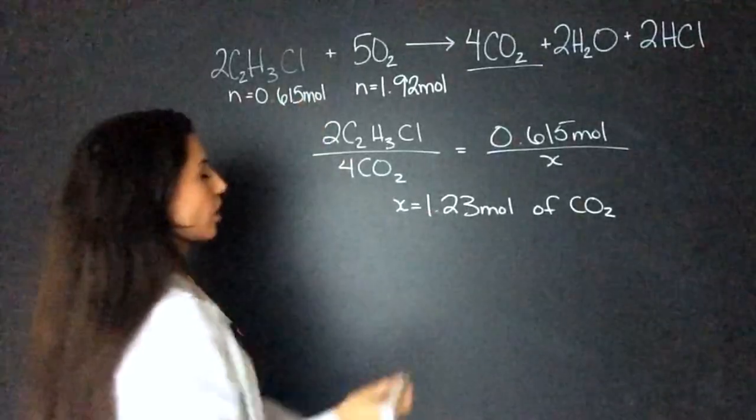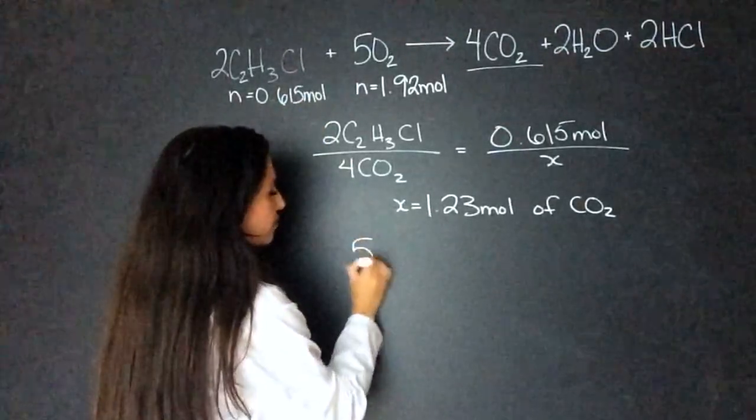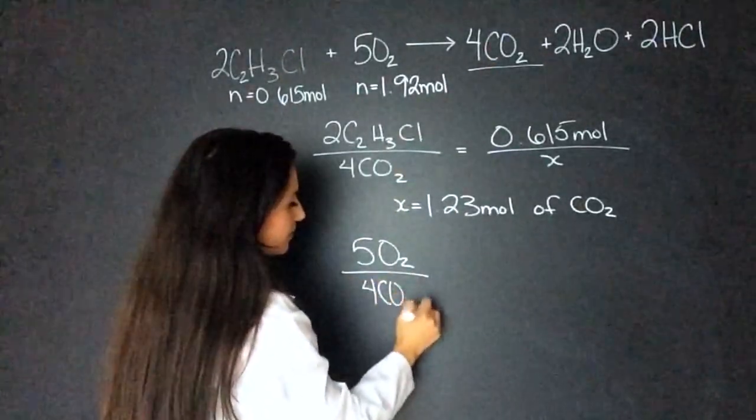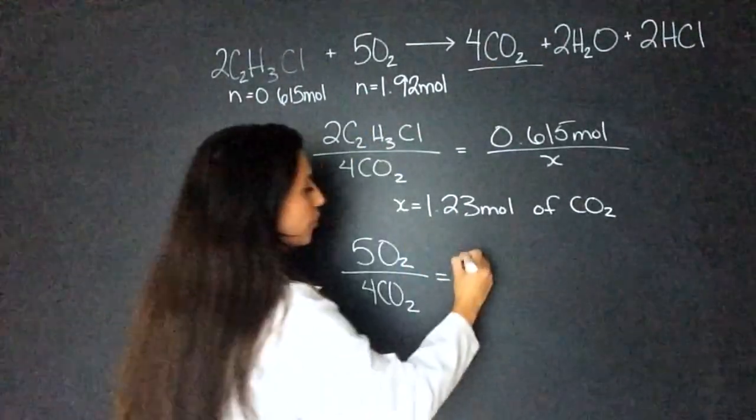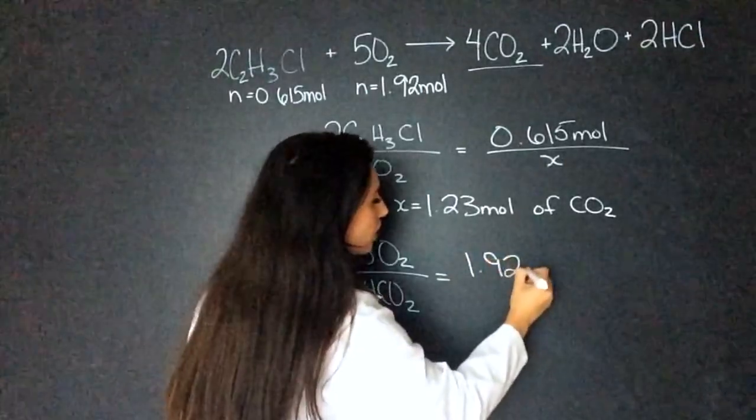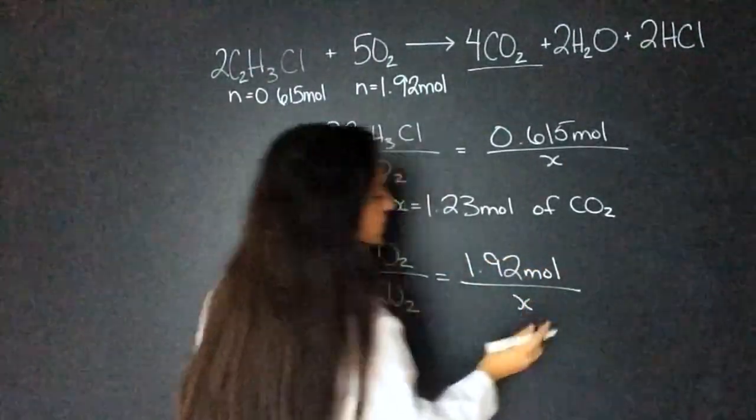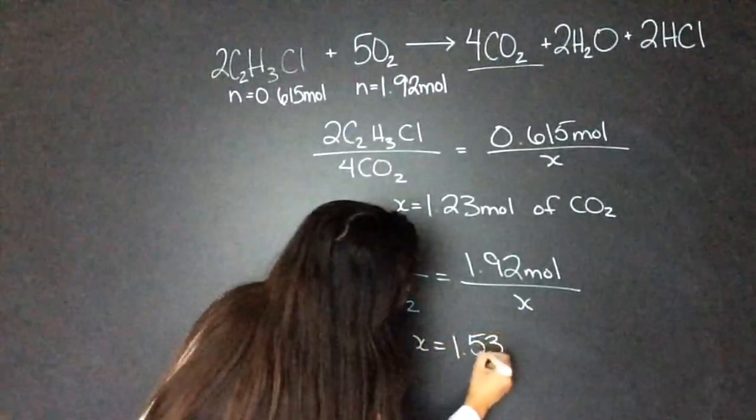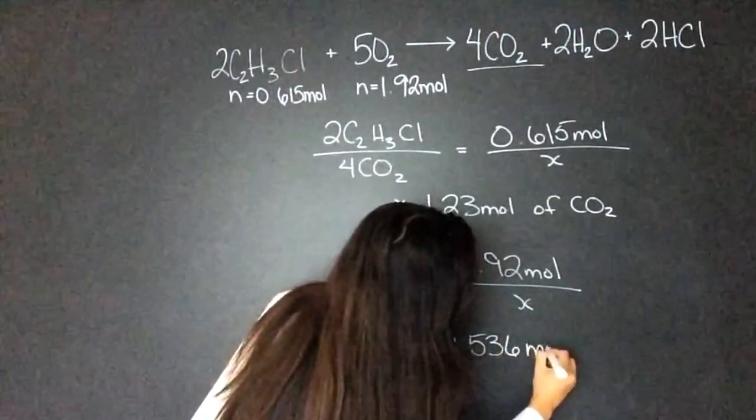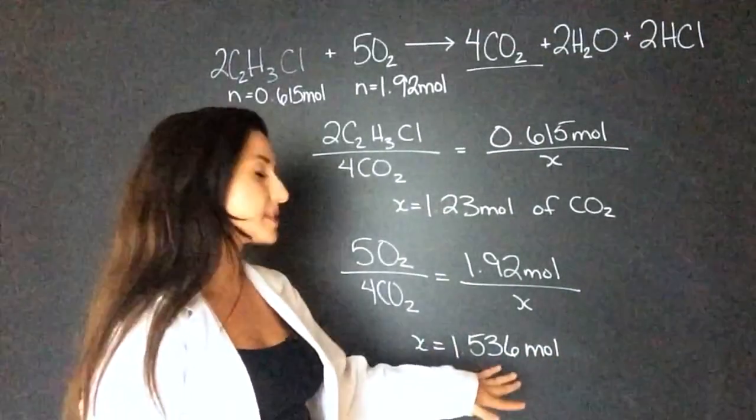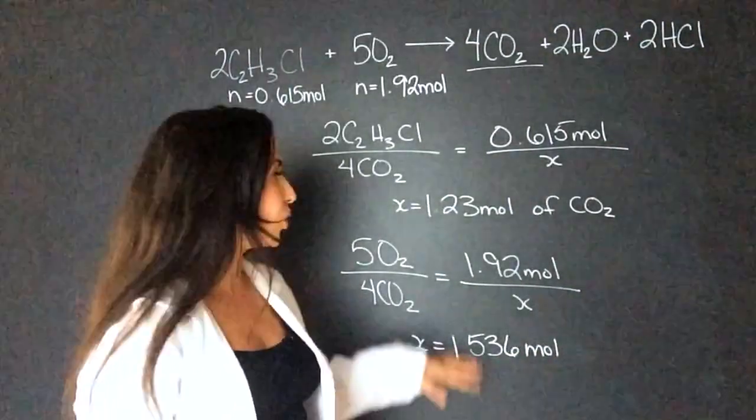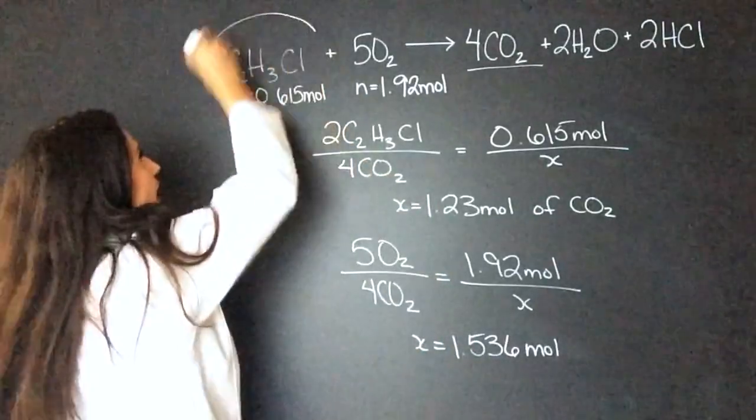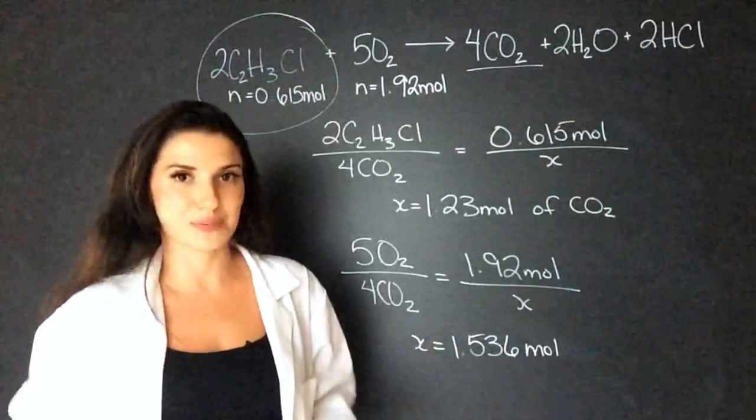Now let's try it with oxygen. So we have five moles of O2 is going to give us four moles of CO2. So that's 1.92 mole divided by X. So X equals 1.536 mole. So the oxygen will give us more moles. So we know that the C2H3Cl is our limiting reagent, same as before.